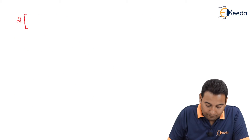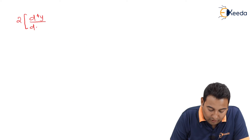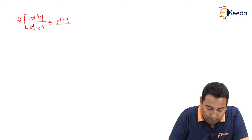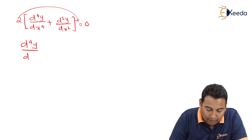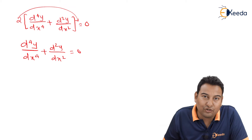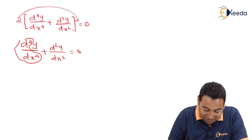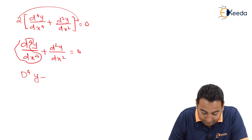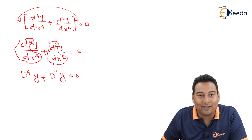Here also it is CF plus PI. Taking 2 common from both terms: d⁴y/dx⁴ plus d²y/dx² equals zero. The 2 cancels to the other side and becomes zero. We are left with this equation, which is also a higher order differential equation. Let me replace this with capital D⁴ and this with capital D².